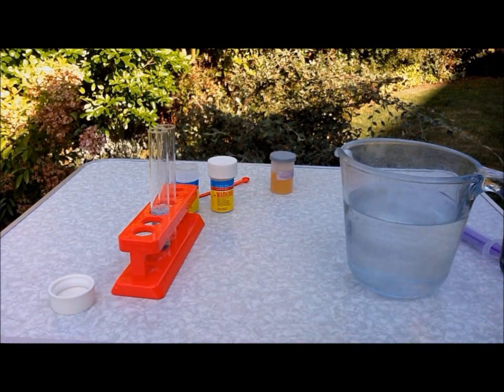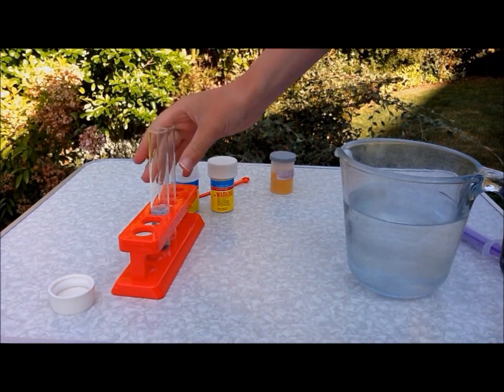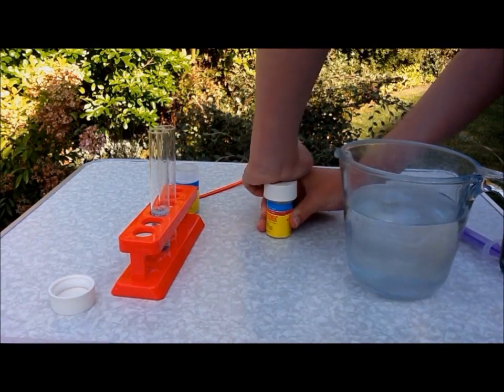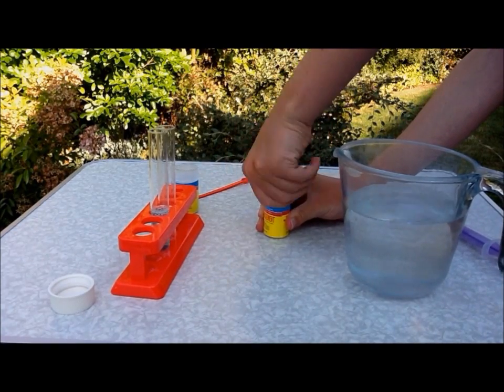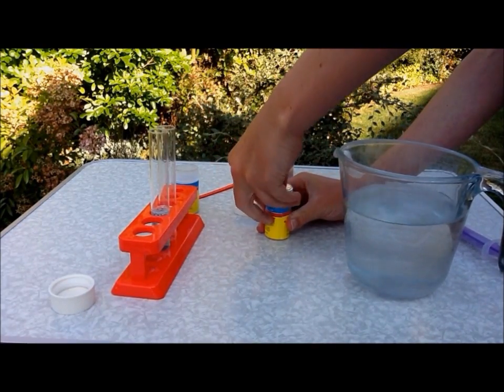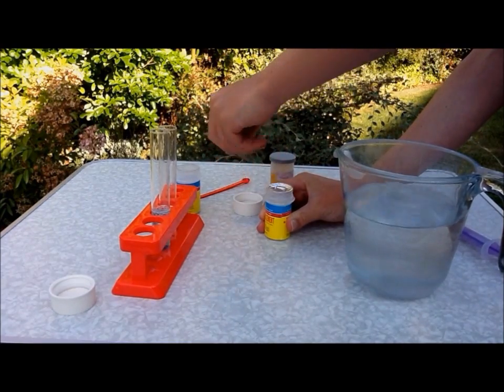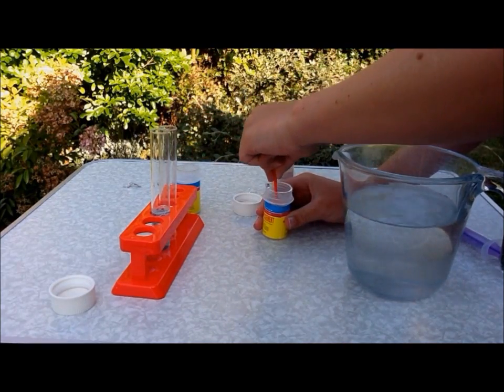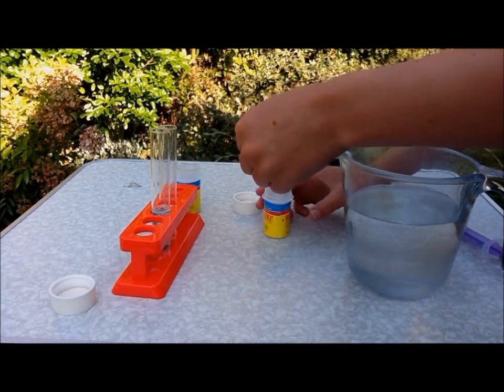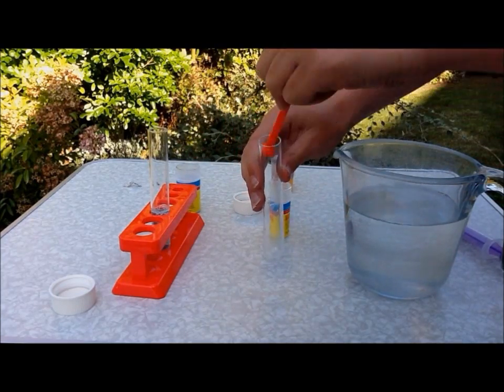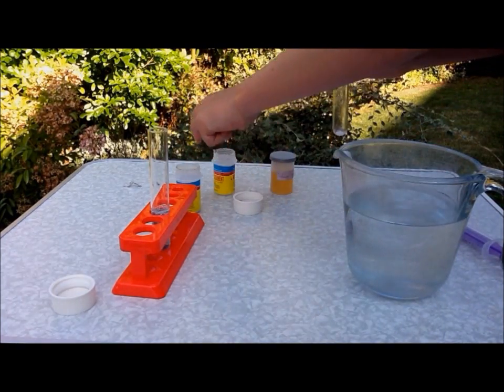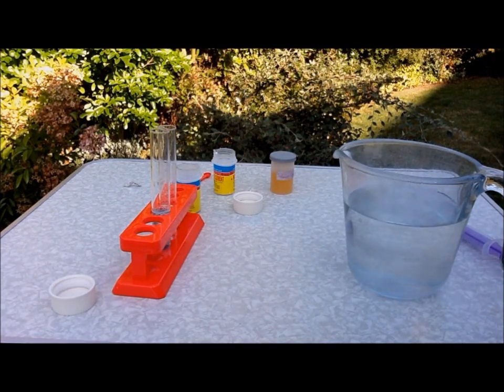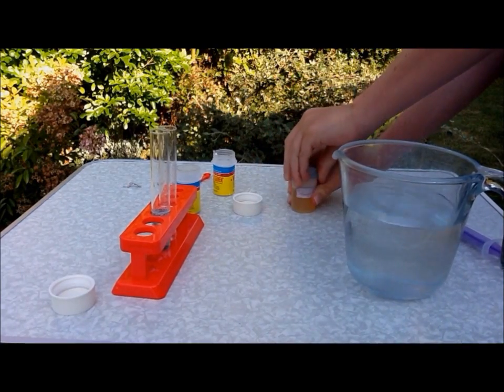Your second test tube will need half as much tartaric acid, so about 0.1g of it, to dissolve in your sodium hydroxide solution. You need to get about 0.1g, put it in the test tube, then dissolve it in 8ml of your sodium hydroxide solution.